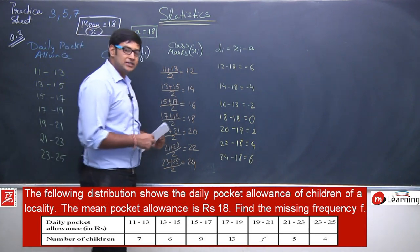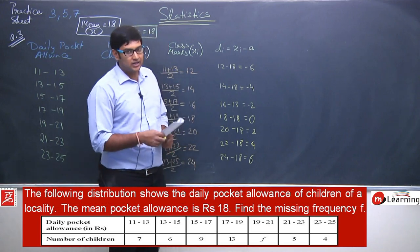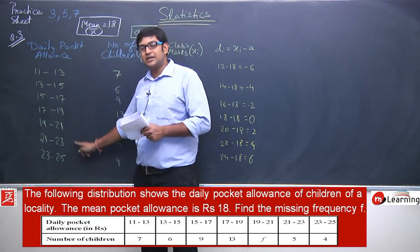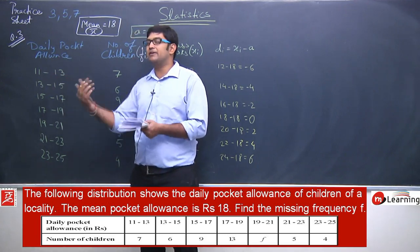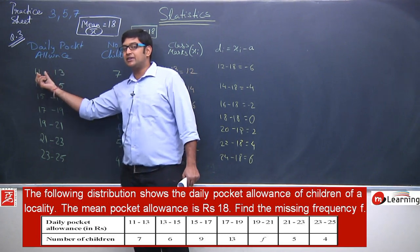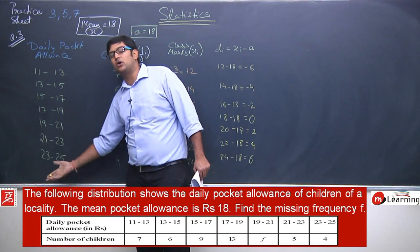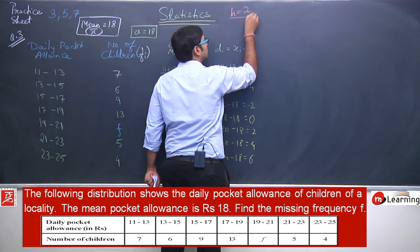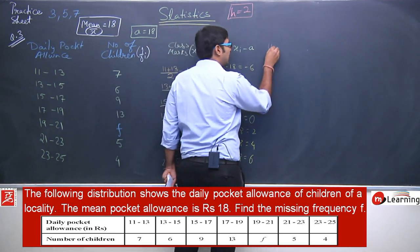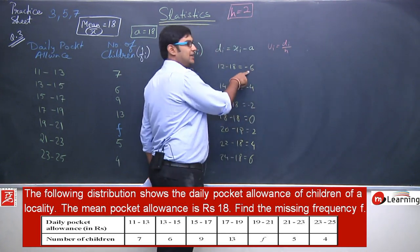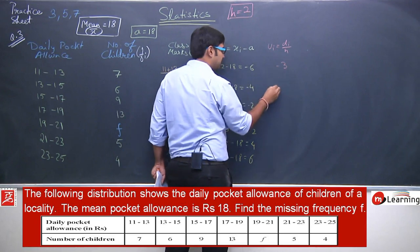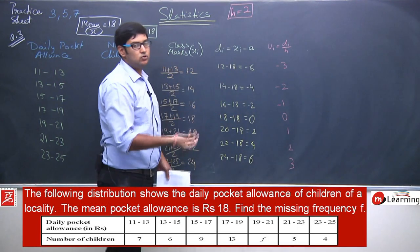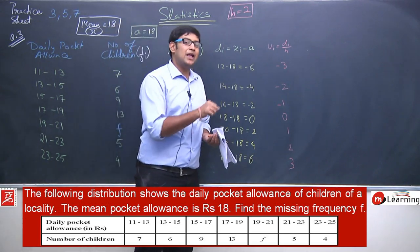Since the class interval is constant (each class has width 2, so h=2), we can apply the step deviation method. u_i = d_i/h: −6/2=−3; −4/2=−2; −2/2=−1; 0/2=0; 2/2=1; 4/2=2; 6/2=3. So u_i values are −3, −2, −1, 0, 1, 2, 3.